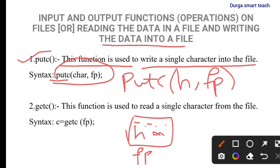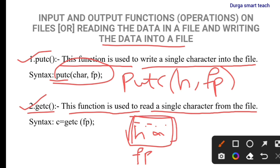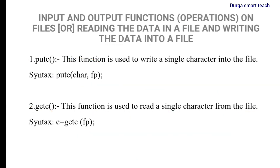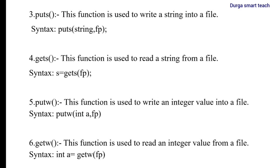The next one is getc. If you want to read a single character from the file, you need to use the getc function. This function is used to read one single character from the file. For example: c = getc(fp). It will return one single character — whatever character is in that file — and store it in c.